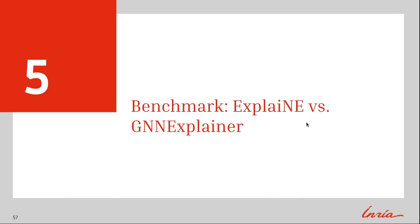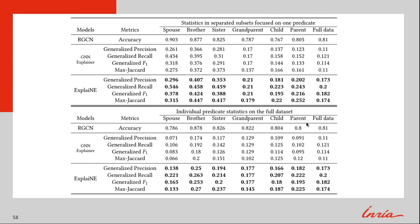With a dataset constructed and appropriate scoring metrics proposed, we perform a benchmark of two state-of-the-art explanation methods: ExplaiNE and GNN Explainer. The results can be seen in this table. The top half of the table reports the performance on subsets of the data using only one predicate. For example, on the has-spouse subset containing only has-spouse triples in their explanations, ExplaiNE had a maximum Jaccard of 0.315. We find that on all subsets, ExplaiNE outperformed GNN Explainer across all metrics.